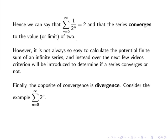But finally, the opposite of convergence is divergence. Consider the example: the sum from n equals 0 to infinity of 2ⁿ, so 2⁰ + 2¹ + 2² + 2³ and so forth, or simply 1 + 2 + 4 + 8 and so on.